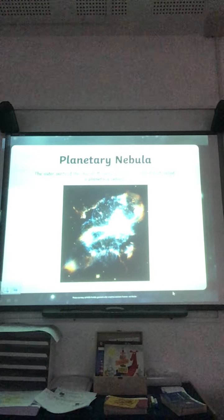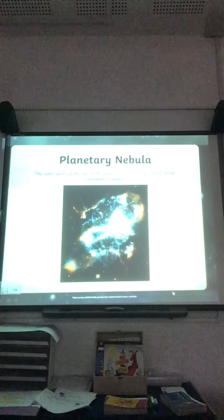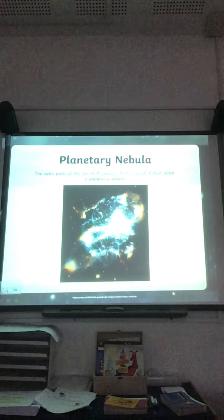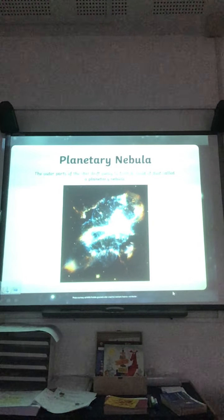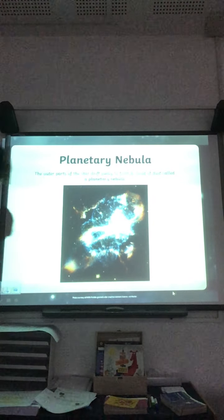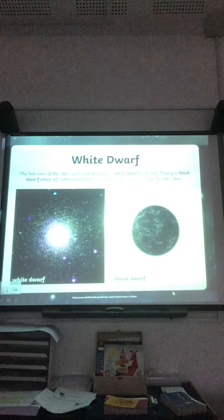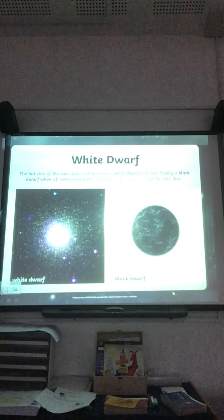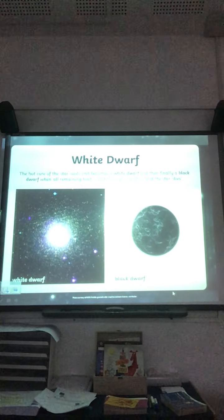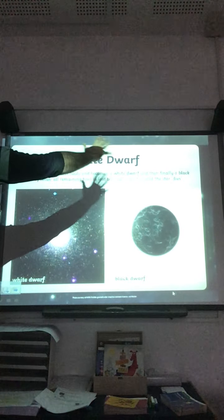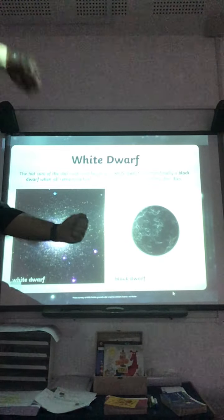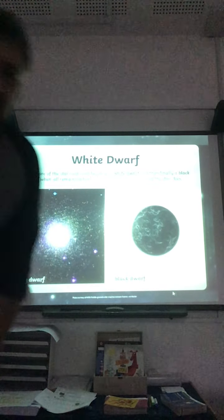A planetary nebula — what a cool word, nebula! The outer parts of the star drift away to form a cloud of dust called a planetary nebula. Then we have a white dwarf — the hot core of the star cools and becomes a white dwarf. And then finally a black dwarf, when all remaining heat is lost through radiation and the star dies.